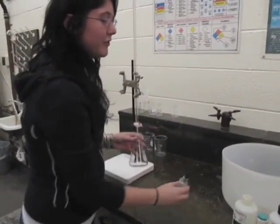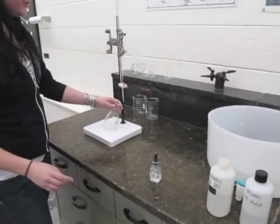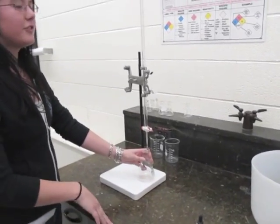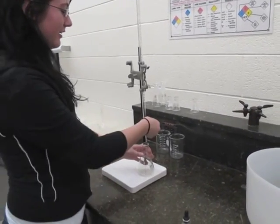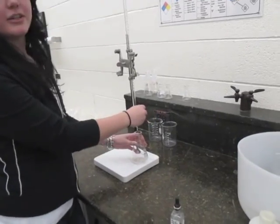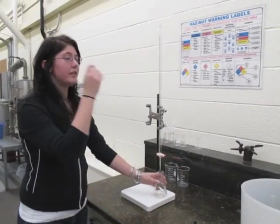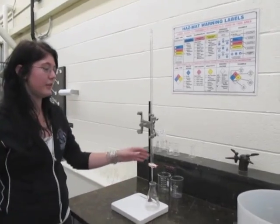You're going to add two drops of phenolphthalein to your solution, bring it over to your burette that's filled with sodium hydroxide. You titrate drop-wise with sodium hydroxide until the solution turns pink, and make sure you record the initial and final volumes in the burette.